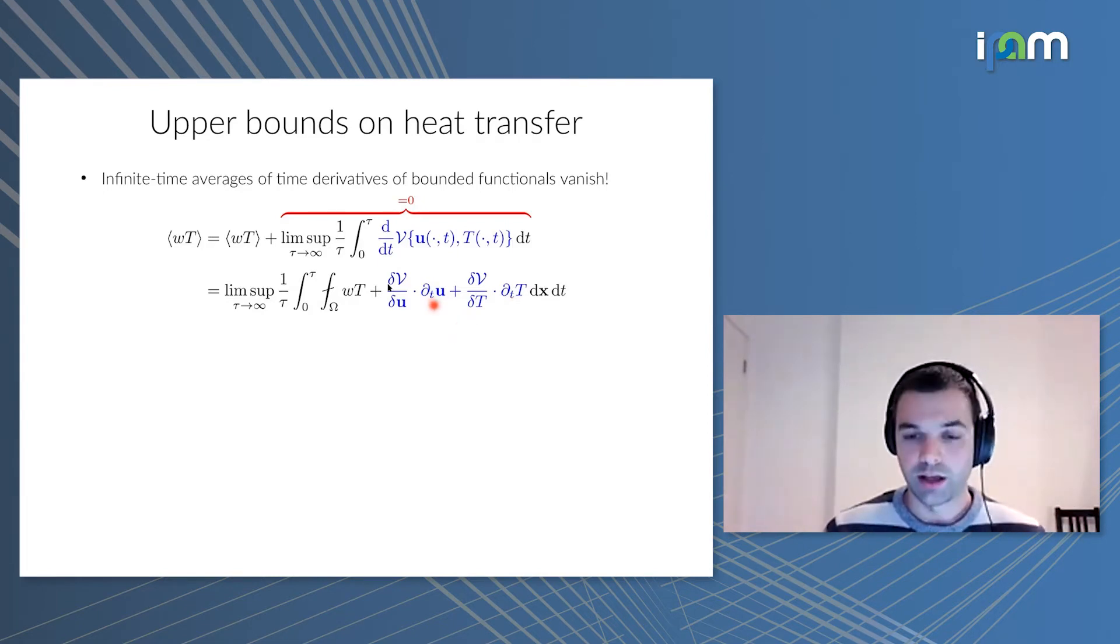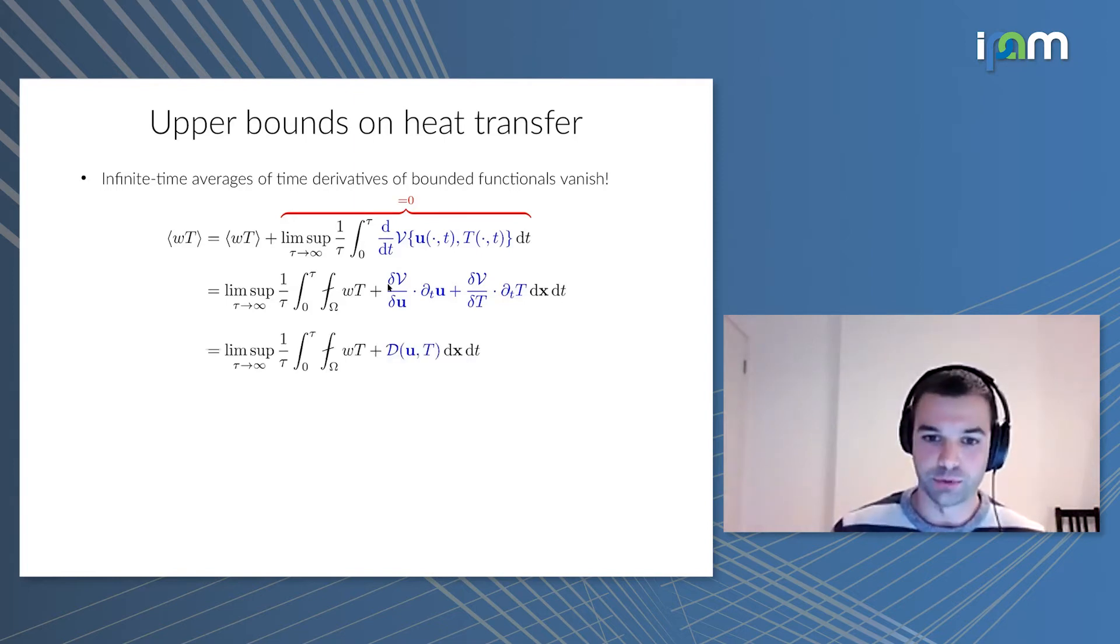Now I can plug in the governing equations, the momentum equation because I know how du/dt behaves, and the heat equation for dT/dt. If we do this, we end up with a space-time average which is exactly the same space-time average as the flux we're interested in, and now we have this d, which is an expression that depends on velocity and temperature, but not on time explicitly. So we have a different quantity here, which is the same average as wT.